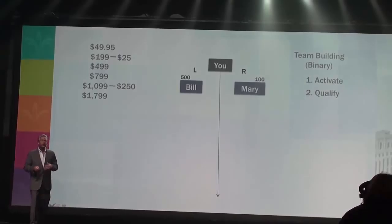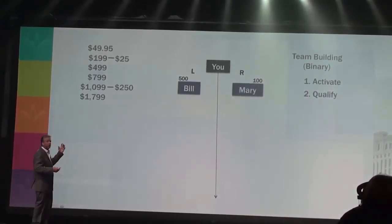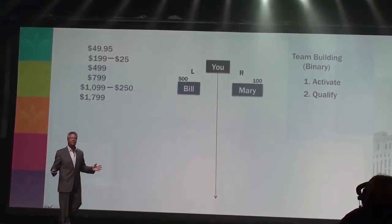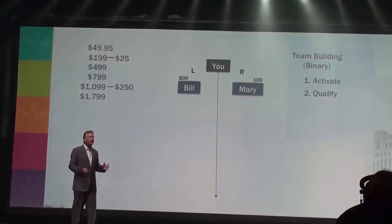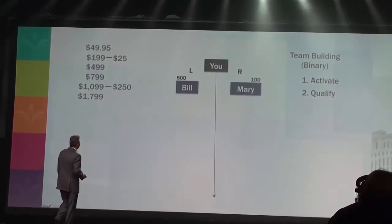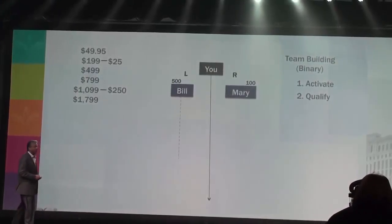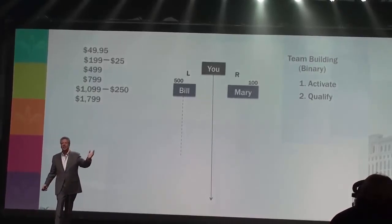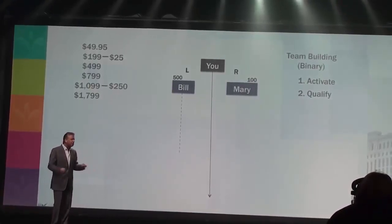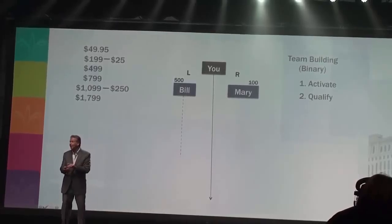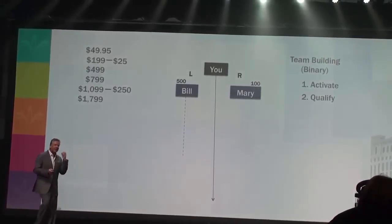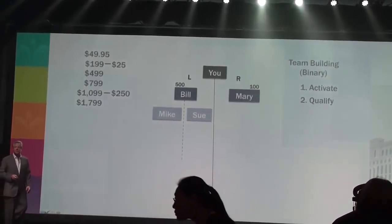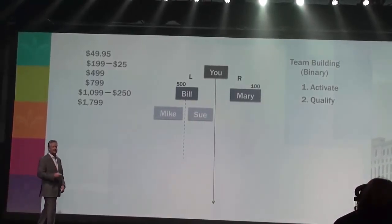So what are you going to do? You're going to continue to build your community and create executives. That's the game — you duplicate executives. Look at Bill. He's come in and activated the program. The next thing Bill's got to do is qualify. Bill's sending out the two-minute video on Instantly Ageless, the phone's ringing off the hook, and he's got two friends, Mike and Sue, who join him in the business. He places them on the left and right side.